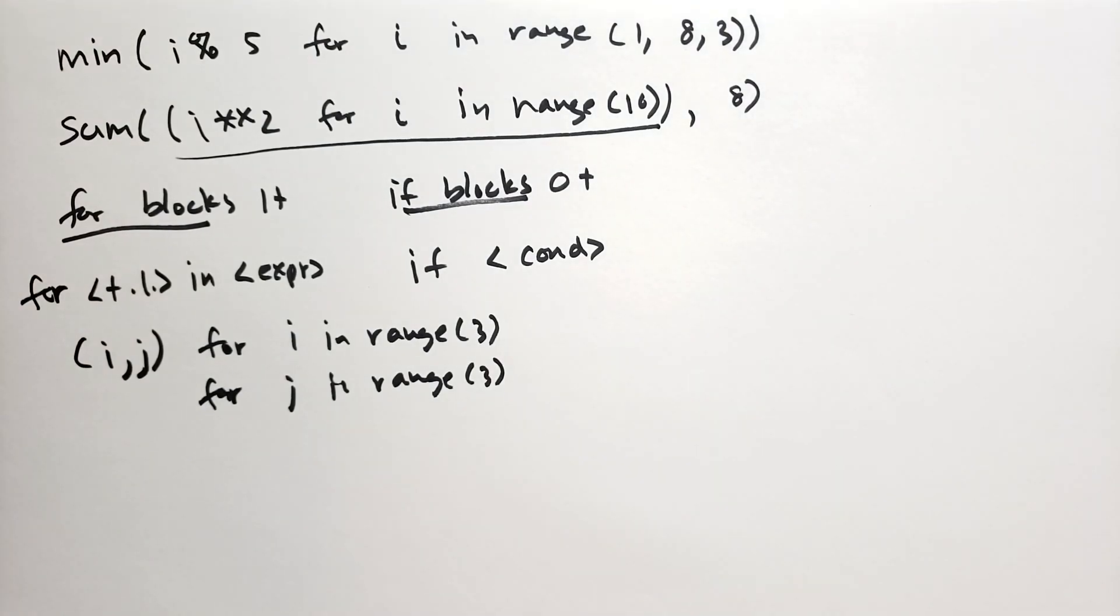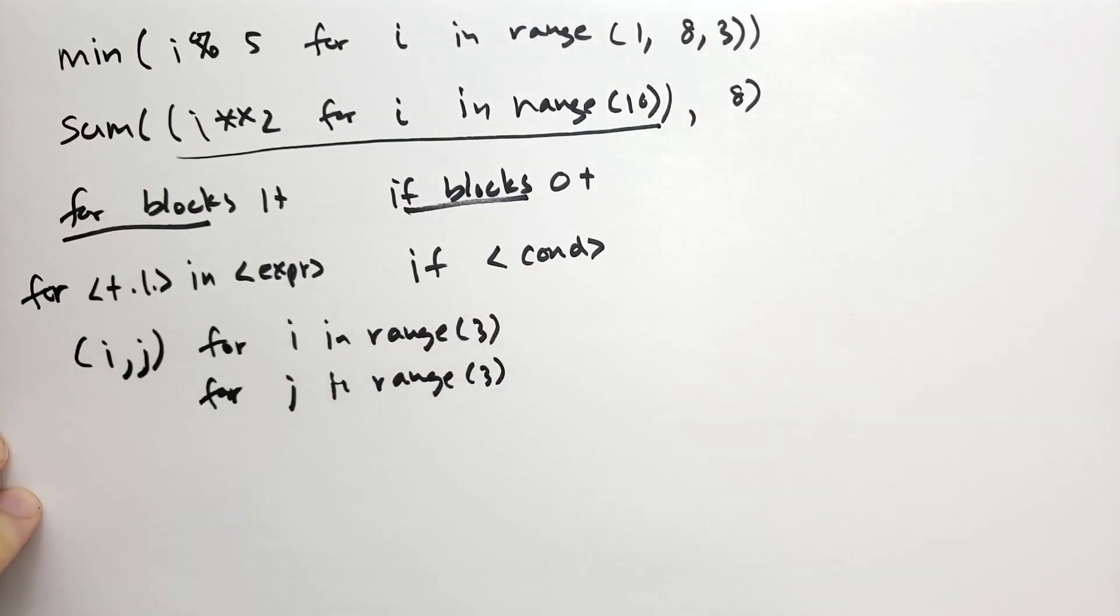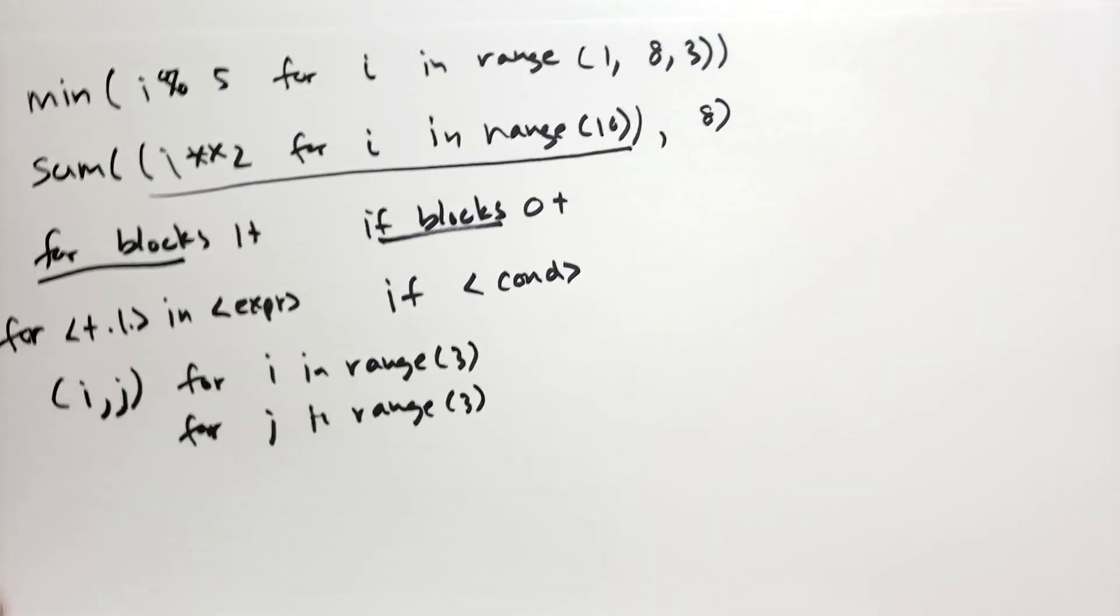In order to understand what's happening, you can take the comprehension and break it down into raw code. Let me give you an example of what that might look like.